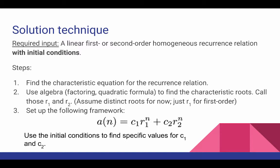We're going to set up the following framework for our closed formula solution. a(n) equals c1 r1 to the nth plus c2 r2 to the nth, where r1 and r2 were the characteristic roots we found in step two. This leaves only c1 and c2 as undetermined numbers.